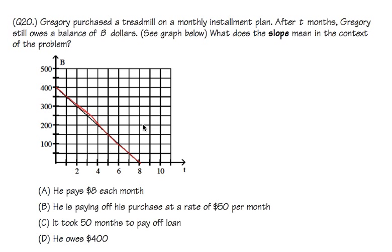I need to have two points. Let me use the first one right here at the beginning. As you can see, at this point, this is $400 when T is equal to 0. That means the treadmill must cost him $400 to begin with.